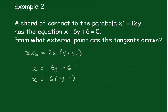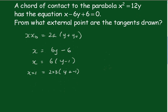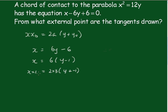So this is x times 1 equals 2 times 3 into y plus negative 1. Just equating those, we can see that x₀ is 1 and y₀ is minus 1, so the external point is equal to (1, -1).